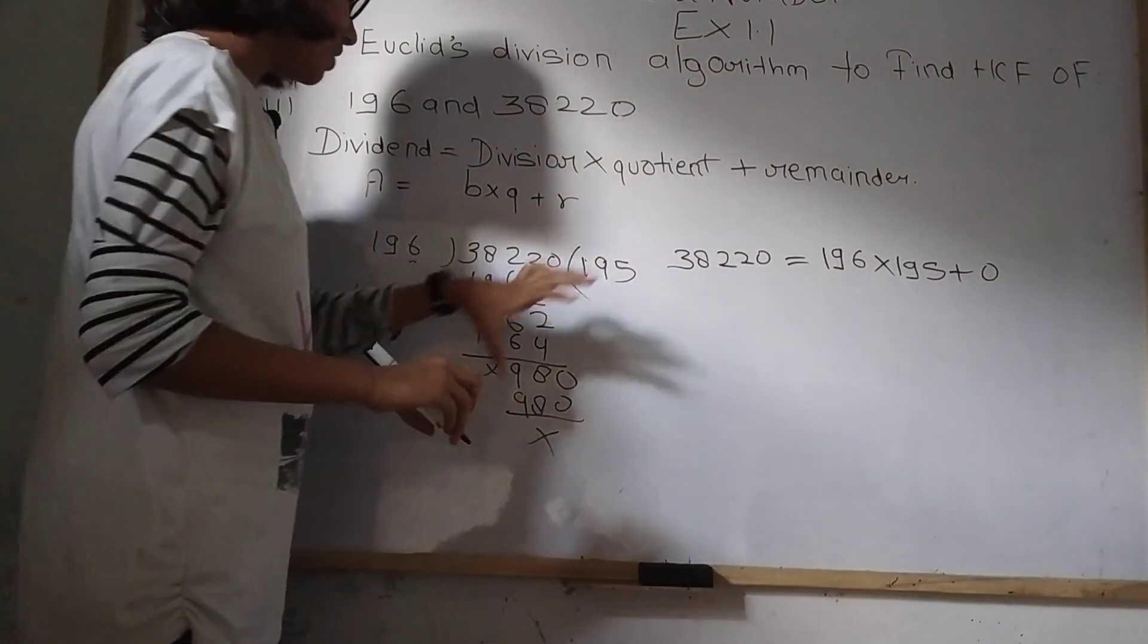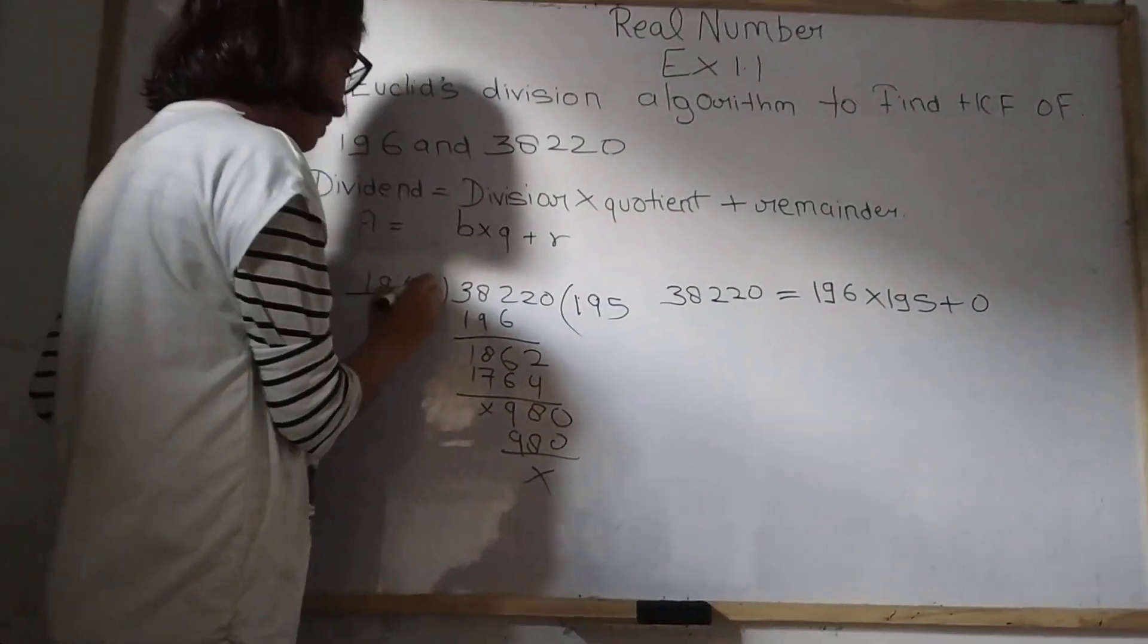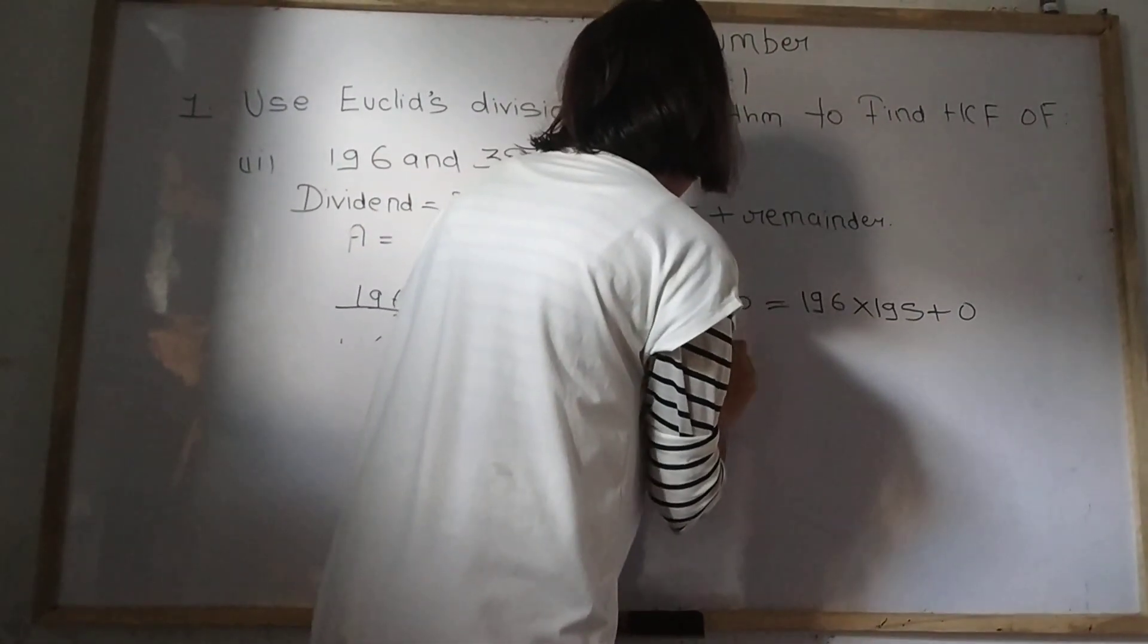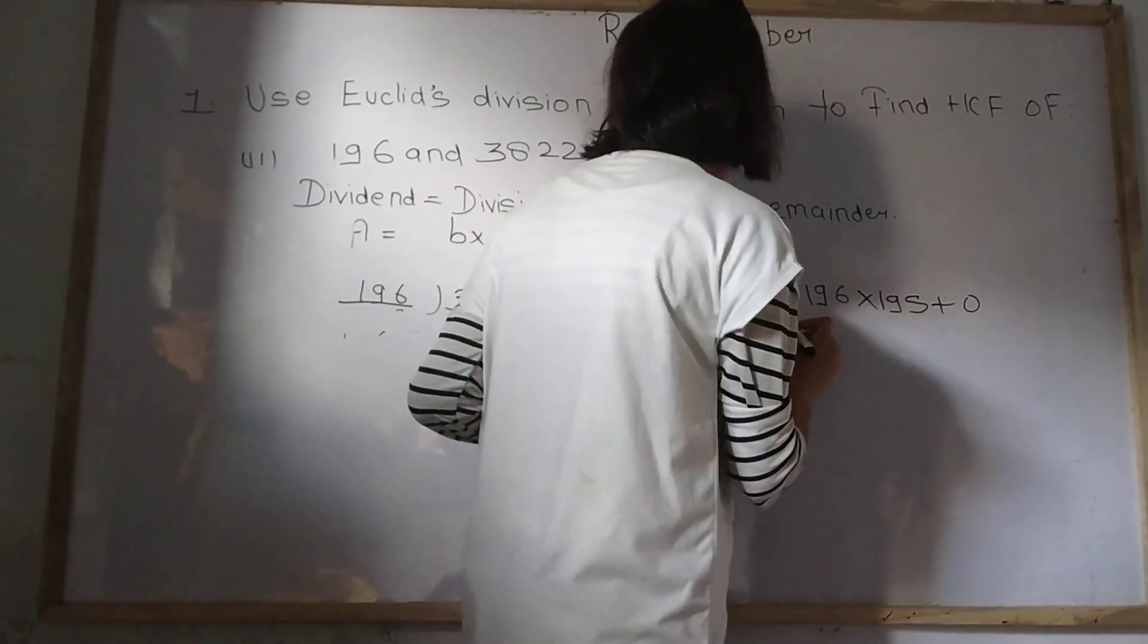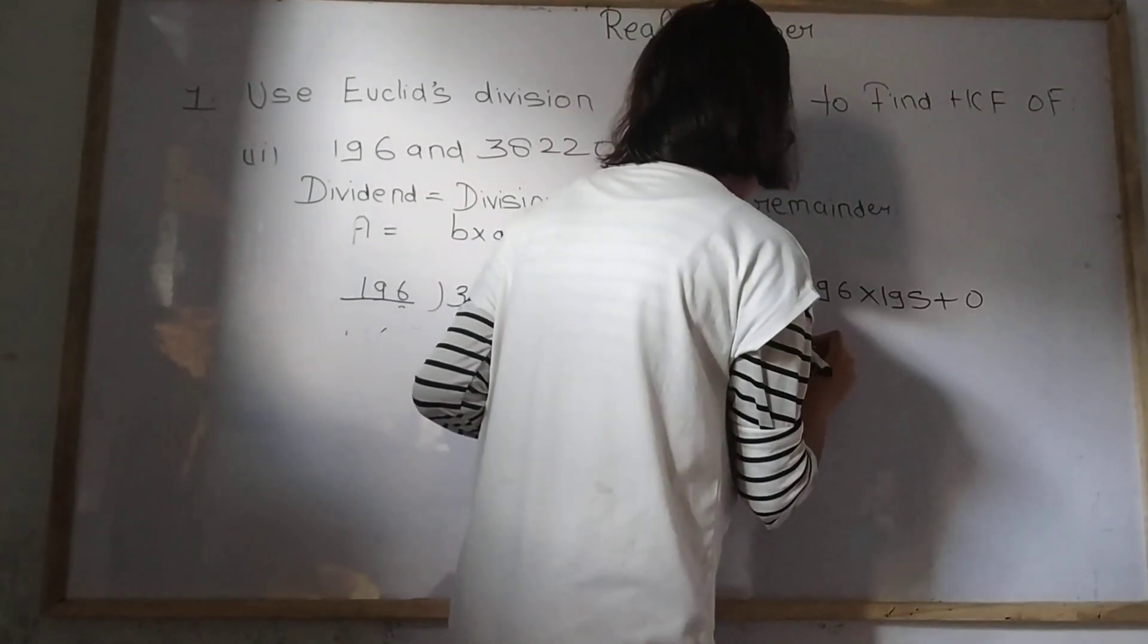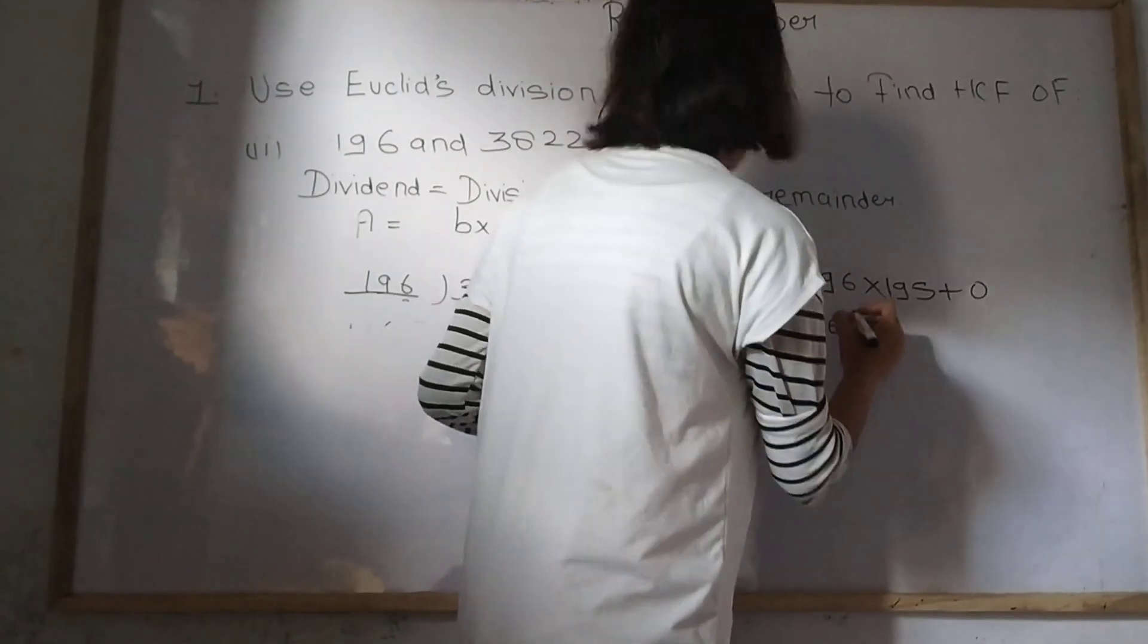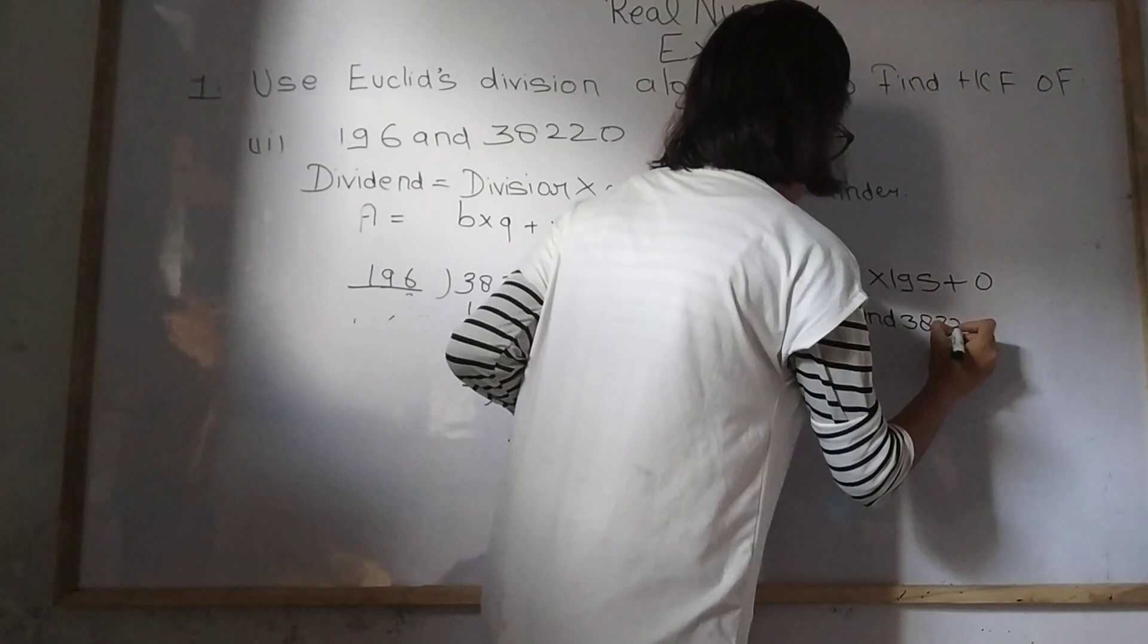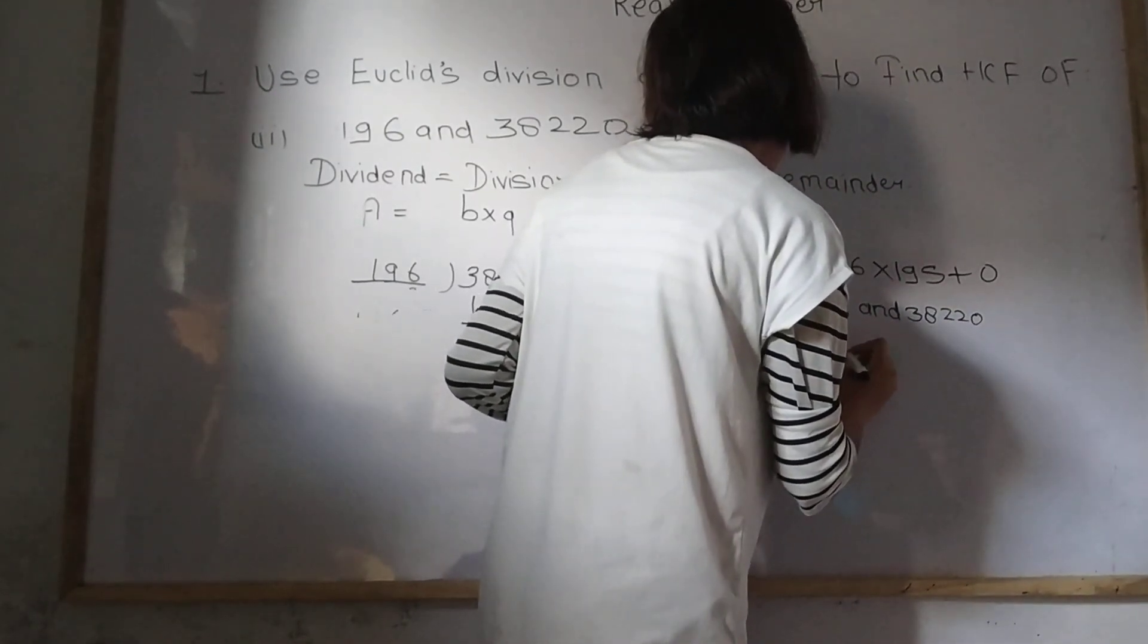So in this process just see which is the last number means which is the divisor. So 196 is the divisor. So we can write the HCF of 196 and 38,220 is 196.